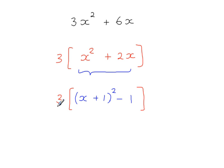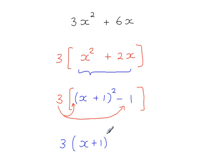That 3 multiplies here and here, giving 3 brackets x plus 1 squared, and 3 times the minus 1 gives you minus 3. This is what you do when the coefficient of x squared is not equal to 1.